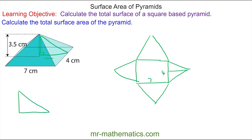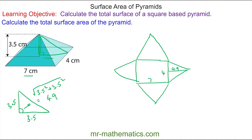We know the base is half of seven, which is 3.5, and the perpendicular height of the pyramid is also 3.5. So we can use Pythagoras's theorem to work out the hypotenuse, which is the square root of 3.5 squared plus 3.5 squared. The hypotenuse, or the slant length, is approximately 4.9 centimeters, which we can include on our diagram. This perpendicular height is the hypotenuse in this right angle triangle.